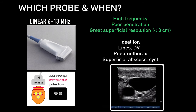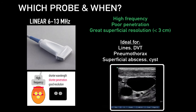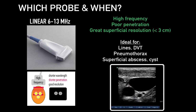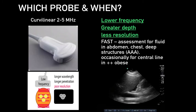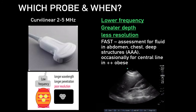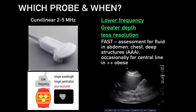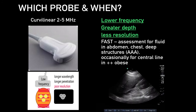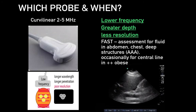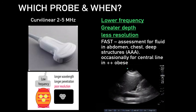As demonstrated on this 2D image, we can see that really high-quality resolution and visualization of soft tissue. The curvilinear probe is 2 to 5 MHz in the lower frequency range — it gets great depth but less resolution. This is often used in the FAST exam to assess for fluid in the abdomen, chest, and deep structures. It is very useful for abdominal aortic aneurysms and can occasionally be used for central line insertion in the very obese.